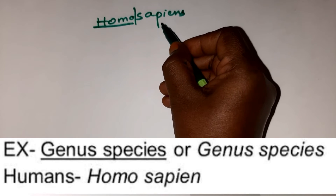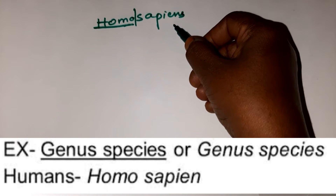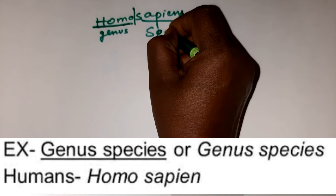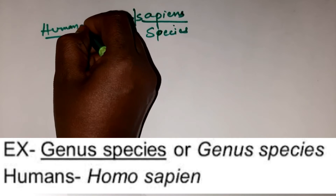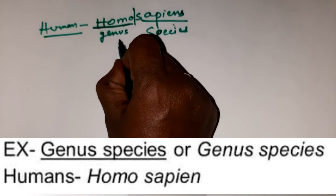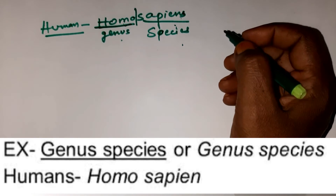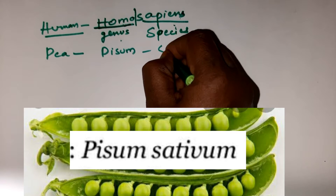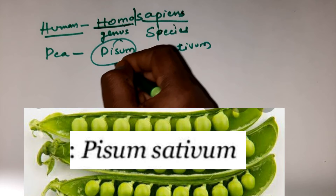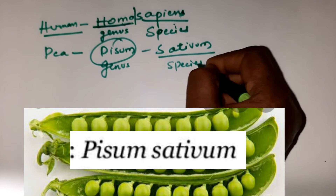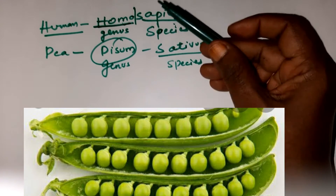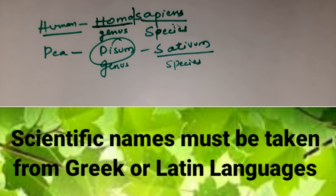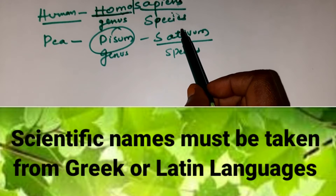Every scientific name has two parts: the first part is the genus and the second part is the species. For example, the scientific name of man is Homo sapiens — Homo is genus and sapiens is species. You can take another example: the scientific name of pea is Pisum sativum — Pisum is the genus and sativum is the species. Scientific names must be taken from Greek or Latin languages.